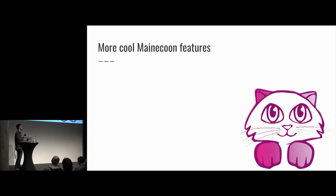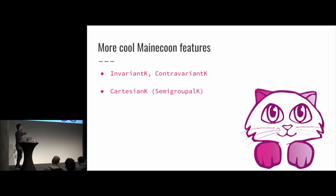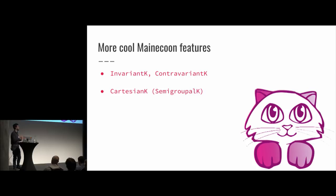Of course, I have to talk about other cool MainCoon features. We also have InvariantK and ContravariantK, which are exactly like FunctorK in their kind, but are invariant and contravariant — they're just the higher-kinded versions of the invariant and contravariant functors in Cats. Another really cool thing is something called CartesianK, which is based off the old name of semigroup. CartesianK allows you, if you have a program and several interpreters, to basically combine them to run your program simultaneously with a bunch of interpreters and get all of the results in a huge tuple. That's a really cool thing you can do.